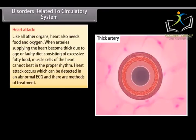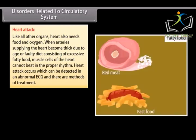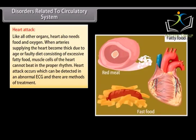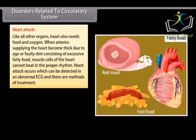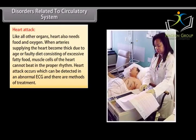Disorders related to circulatory system: Heart attack - Like all other organs, heart also needs food and oxygen. When arteries supplying the heart become thick due to age or faulty diet consisting of excessive fatty food, muscle cells of the heart cannot beat in the proper rhythm. Heart attack occurs which can be detected in an abnormal ECG and there are methods of treatment.